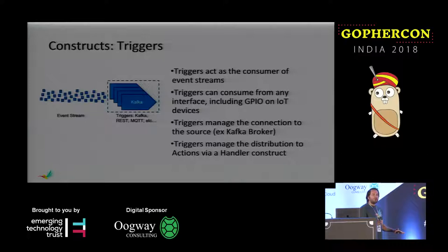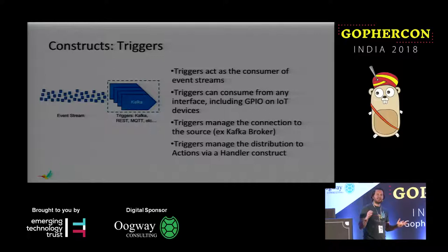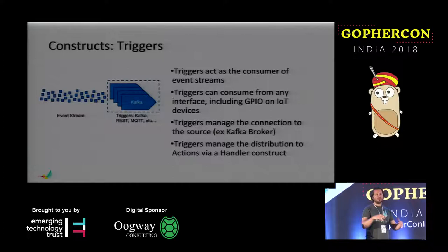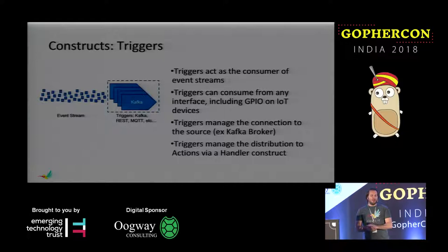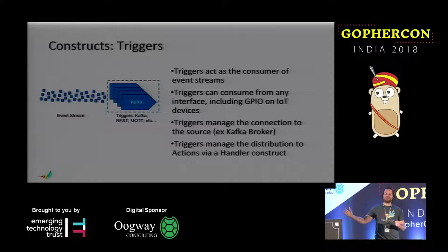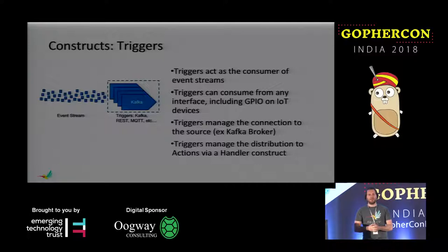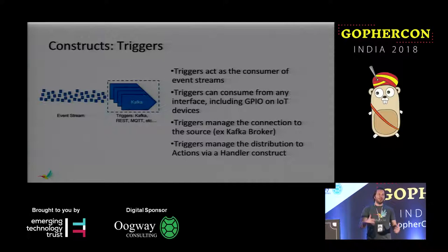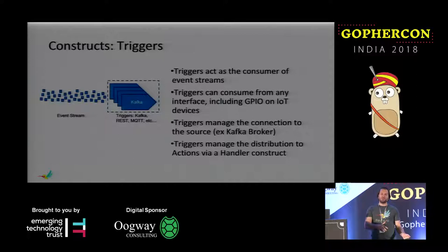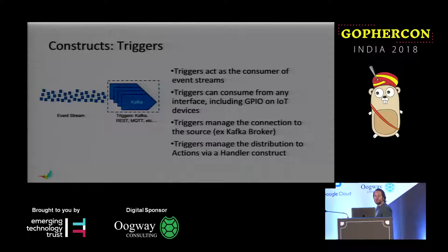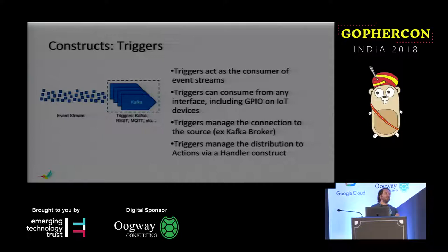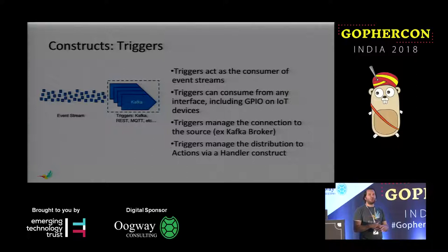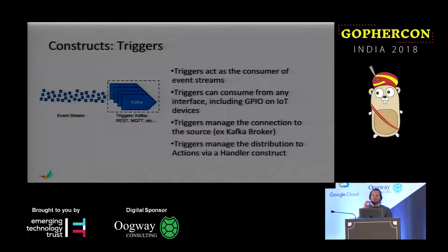Before I show you what FloGo is, there are a few constructs I want to talk about. It's an event-driven framework, so we modeled it after a few key concepts. Triggers are the entry point for application logic — a trigger could be anything: Kafka, REST, MQTT, a number of different things. You can have multiple triggers within your application model. The triggers themselves handle the connection to the remote resource, connection pooling, all that stuff. In the case of IoT, the trigger could be reading straight off an IoT device — off a pin on an IoT board, calculating temperature, or whatever.